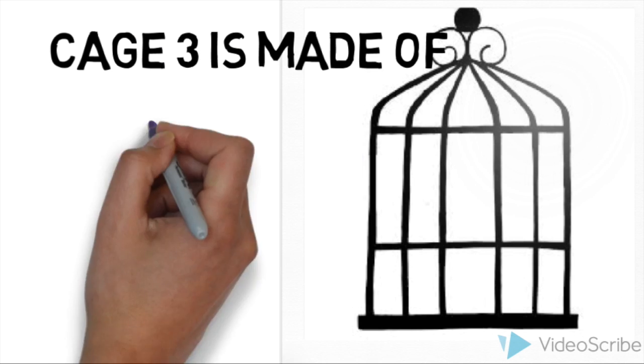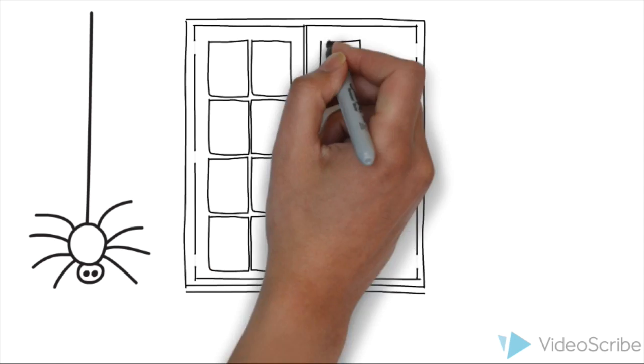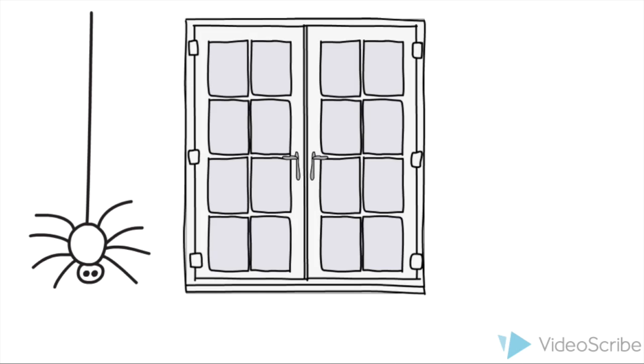And the third cage, cage 3, is made out of glass. To understand which is the correct cage, let's take a trip back to chemistry and physics class and investigate what happens when you rub silk on glass. By the way, silk is made from spiders.